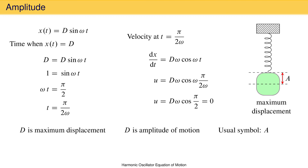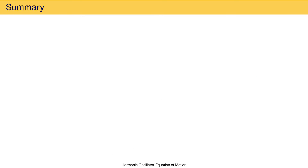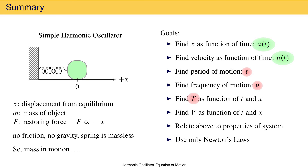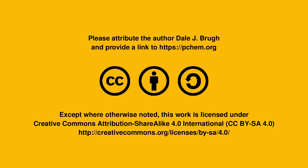The usual symbol for amplitude is A, which allows us to write displacement as amplitude times sine omega t, or A times sine of the square root of the force constant over mass times time. Every quantity in this expression now has a physical interpretation. For this harmonic oscillator system, we have found displacement and velocity as a function of time using only Newton's laws, related to the force constant and mass. The remaining goals — period, frequency, kinetic energy, and potential energy — are addressed in other microlectures. And that's the harmonic oscillator equation of motion.